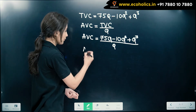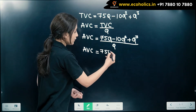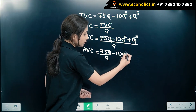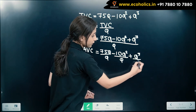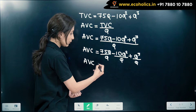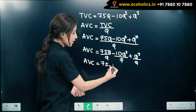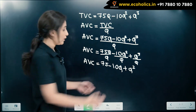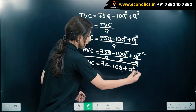Our average variable cost will be equal to 75Q minus 10Q squared plus Q cubed, divided by Q. Simplifying, we get 75Q/Q minus 10Q²/Q plus Q³/Q, which gives us AVC equal to 75 minus 10Q plus Q squared.